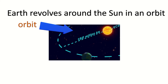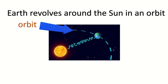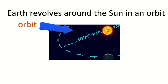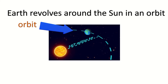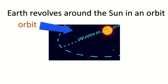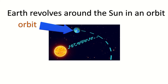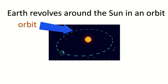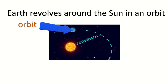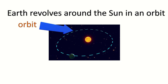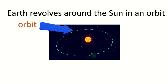Think of it like athletes running in a stadium — each runner runs in their own path. Similarly, planet Earth revolves around the sun in its own orbit. Not only Earth, but all planets revolve around the sun. The orbit is not actually a circle; it is elliptical, meaning it's not perfectly round — it's a bit like the shape of an egg.